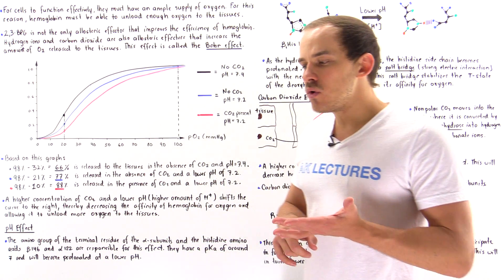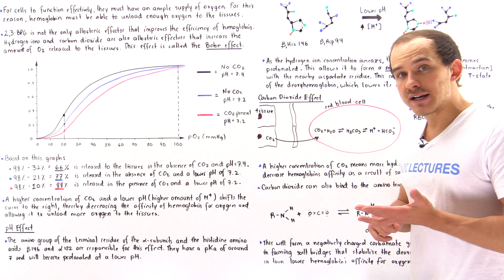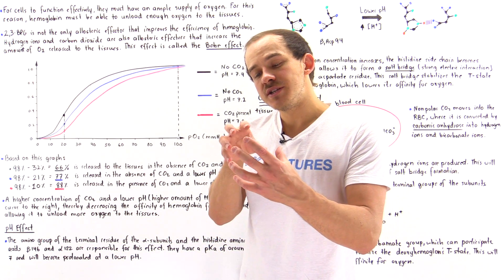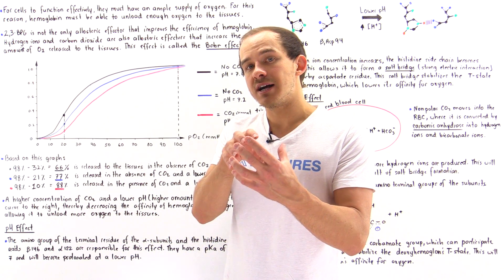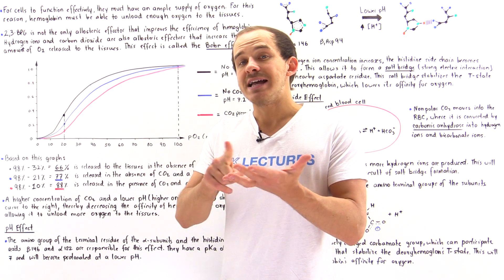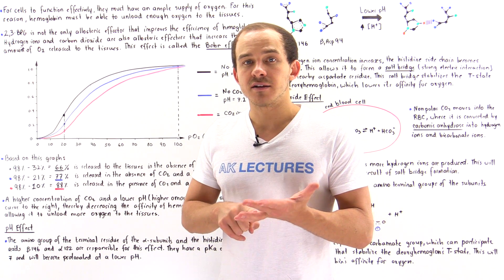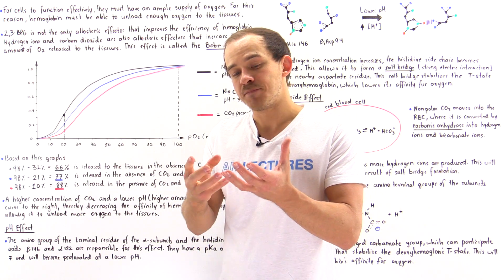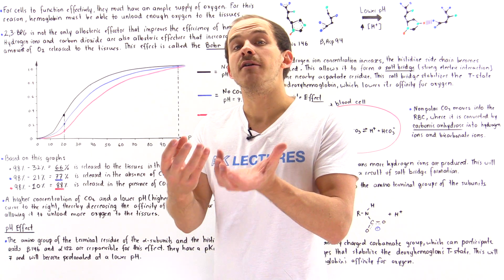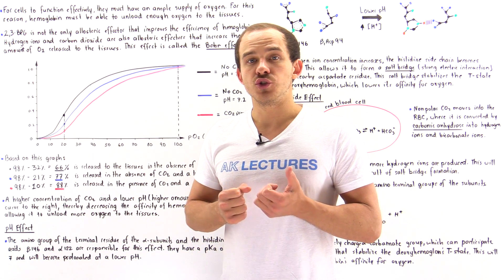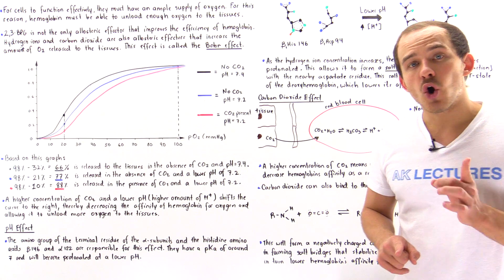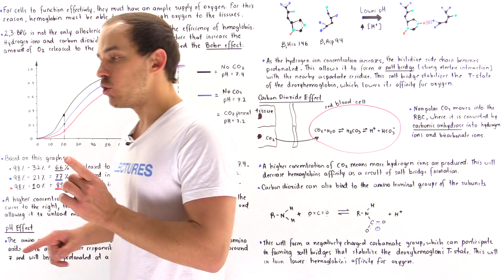Previously we spoke about one allosteric effector molecule, namely 2,3-BPG, that binds into the center pocket of deoxyhemoglobin, stabilizing the T state and decreasing the affinity of hemoglobin for oxygen. This is precisely what allows hemoglobin to release enough oxygen to the tissues of our body. As it turns out, 2,3-BPG is not the only allosteric effector for hemoglobin.